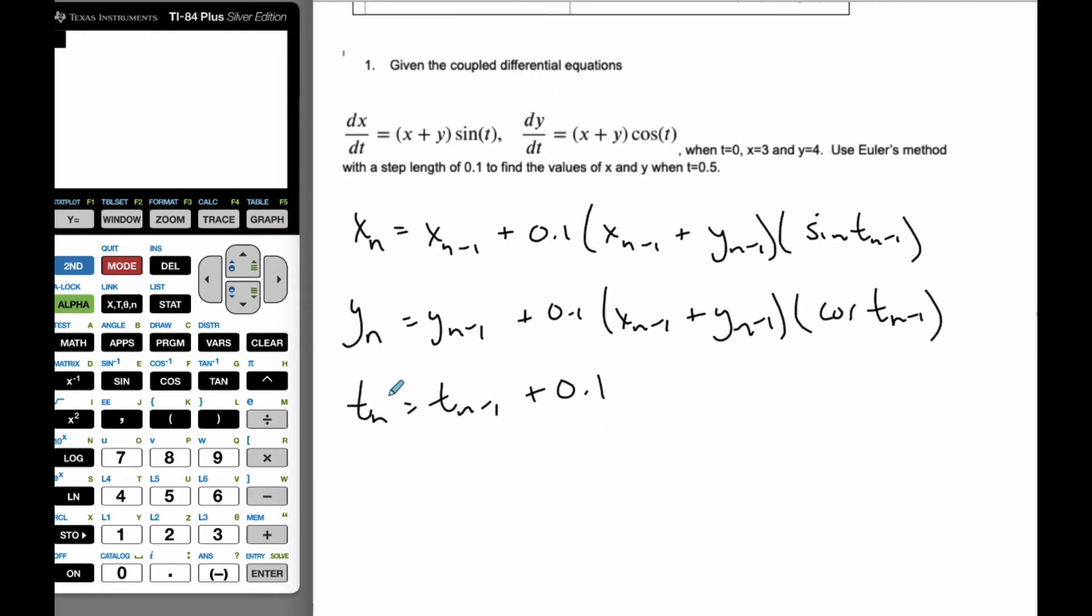And I know that when n equals 0, x is going to be 3, y is going to be 4. These are my initial values. And t is going to also be 0. I'm going to go for where n equals 5. And then I'm just going to show this. I don't have to show the intermediate steps, but I am going to have to do it on my calculator.